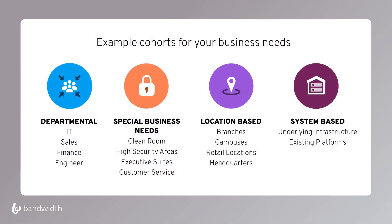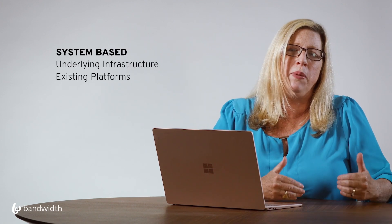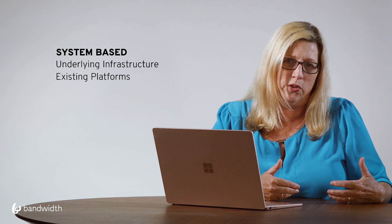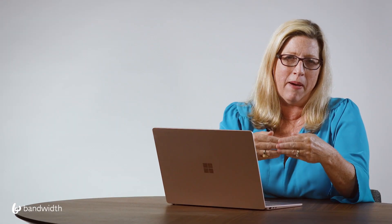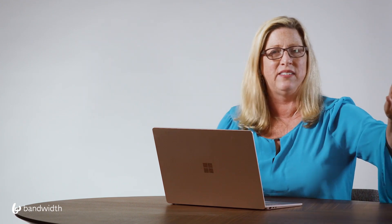You might also consider location-based cohorts — useful if you're a bank, retail chain, or healthcare provider with multiple locations, migrating branch by branch. Finally, consider grouping by system, especially if you have multiple UC platforms. Migrating one system at a time lets you decommission each before moving on to the next, which is a big part of the cost savings from migrating to cloud platforms.